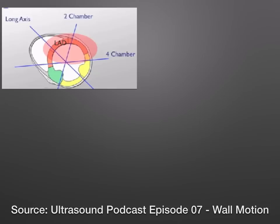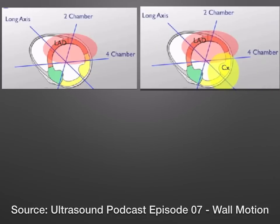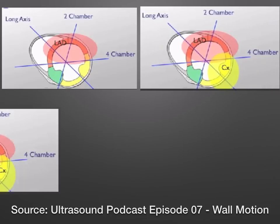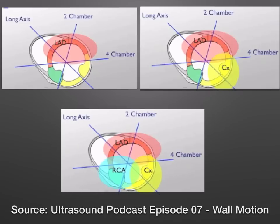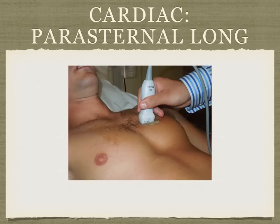After we have that, we've come up with the different areas of where the circumflex and LAD run, and we can see they cover specific areas of the parasternal view. Obtaining the views correctly is very important, especially further down the road when we try to show cardiology that we can do this reliably, so we want to make sure we get good views.